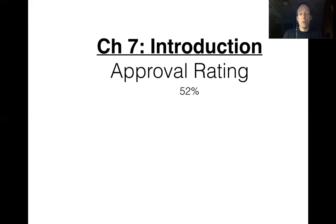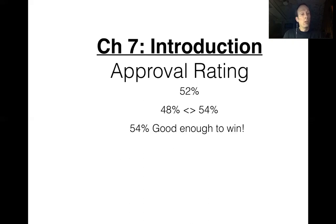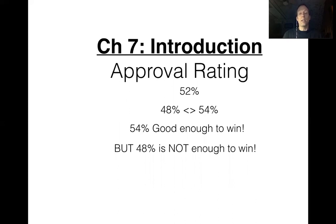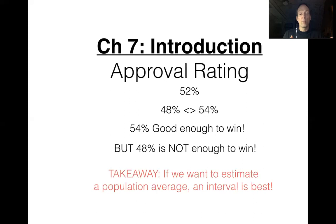It's much safer to use an interval to estimate something. If we're at the high end — 54% — that's enough to win the election, so Biden feels good. But if we're at the low end — 48% — that's not enough to win, meaning Biden has a lot of work to do. So our main takeaway is: whenever we estimate population parameters — averages, variances, standard deviations — Section 7-1 starts with population averages, and we always want to use an interval because it's much safer.